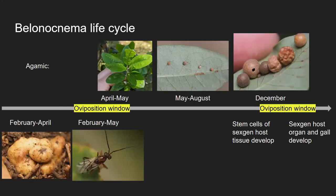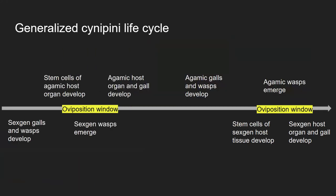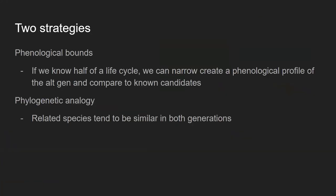A paper published a few years ago compared the number of species reared from the sexual generation of Belonocnema versus the agamic generation — only five species were found in the sexual generation, versus 20 or 30 known from the agamic. Those defenses exist because pressure is so much higher. But of course evolution is able to solve those problems, and the agamic defenses, while much stronger, are not adequate to completely protect the inducer. So we get a lot of other organisms showing up, and the sexual generation galls will get those too — but typically less so because they are ephemeral.